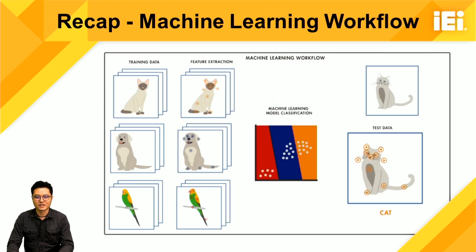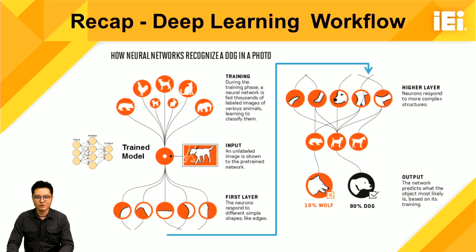Let's have a recap of the AI process. In traditional machine learning, engineers and data scientists have to define the features of an input image manually — for example, in this case, we have to create features for ears, mouth, and tail appearance. Then you can predict the input image. In deep learning, we prepare pre-training images and use a suitable topology to train the model. Features are created automatically by the algorithm — deep learning starts to extract edges in the first layer, then gets bigger regions such as nose, ears, and legs in deeper layers, and finally predicts the input image.